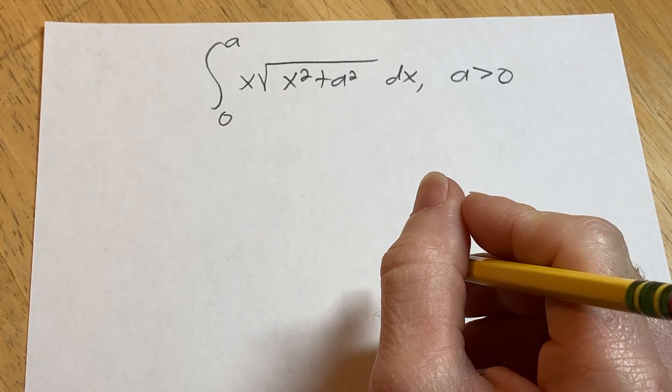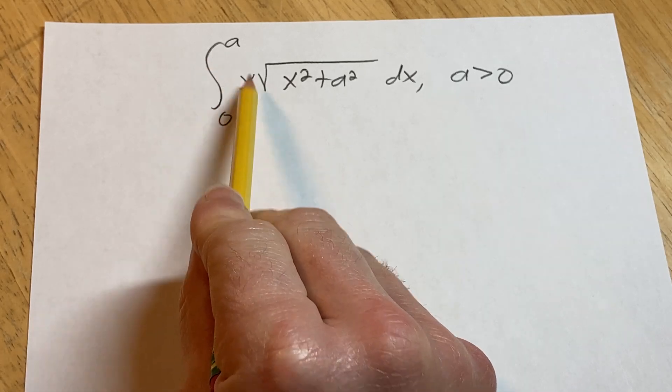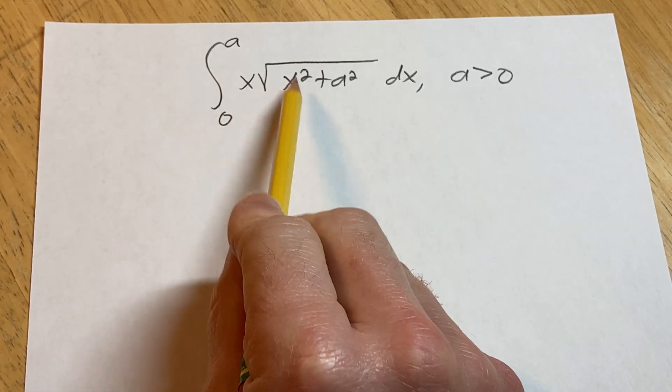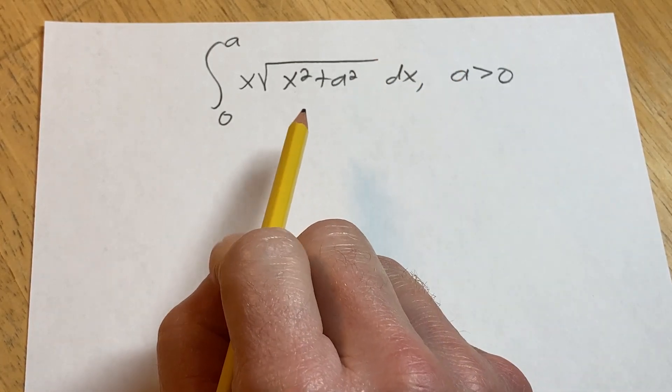Hello, we have a random integration problem here. We have a definite integral from 0 to a of x times the square root of x squared plus a squared with respect to x, and a is a positive number in this case.